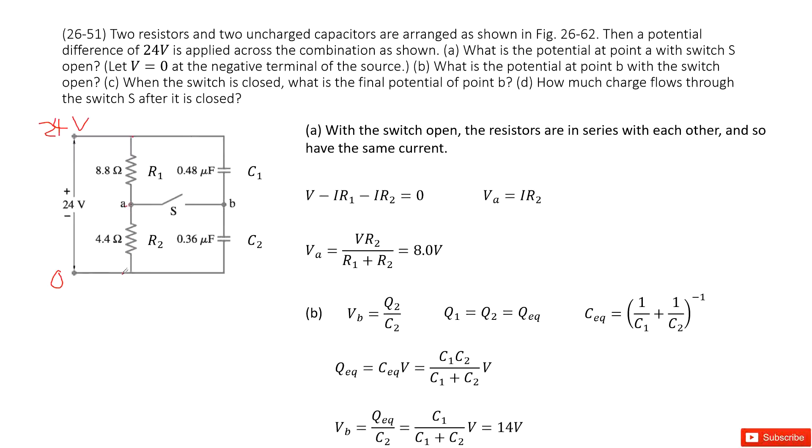Voltage at A, it looks like we need to find the current I times R2. And how you find I? Use Kirchhoff's loop. So the voltage for battery, 24 volts, this is V minus I times R1 minus I times R2. The current goes through the resistance, voltage decreases, and then equal to 0.